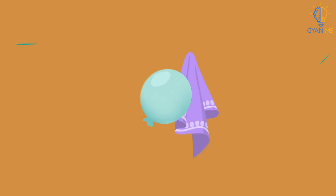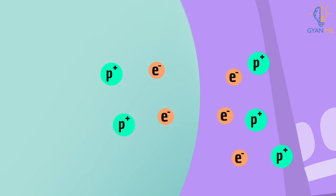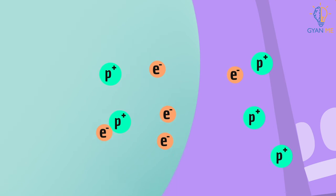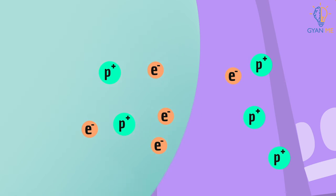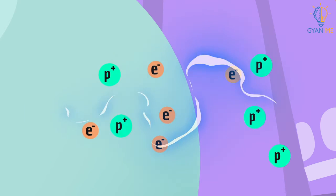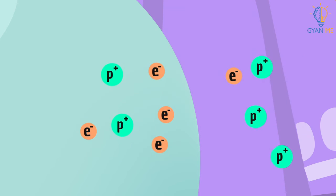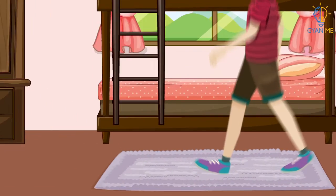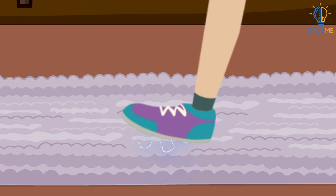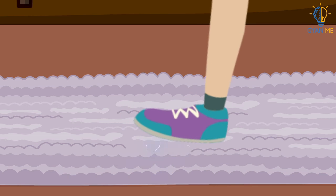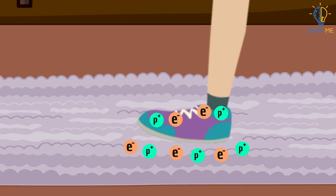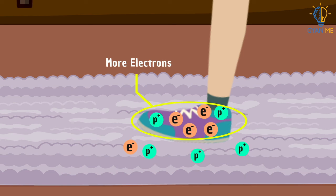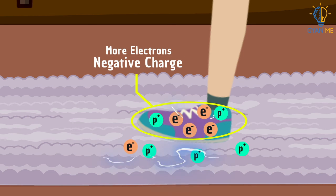Now students, recall that electrons on the surface of an object can sometimes be removed by rubbing. Static charge can be built up when two insulating materials are rubbed together, such as when we rub our foot on carpet during winters. Friction between the materials causes electrons to be transferred from one surface to the other. One material ends up with more electrons, so it now has an overall negative charge.